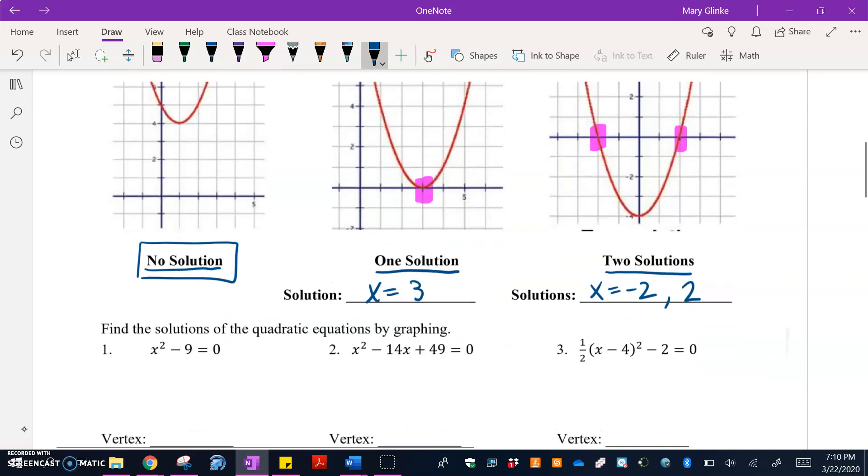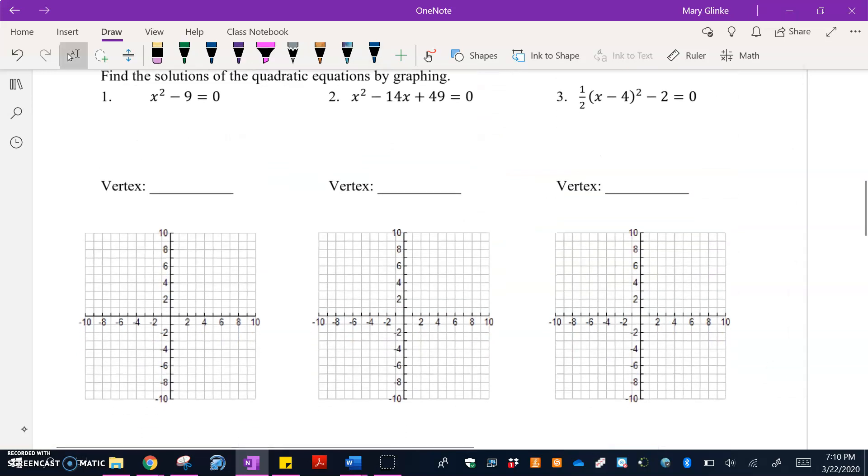So let's look at some where they're not already graphed for us. We have to graph these and then find our solutions after everything's graphed. Notice in each of these, these are equations. They equal zero instead of equaling y. So we're looking for the values of x that make the equation true.